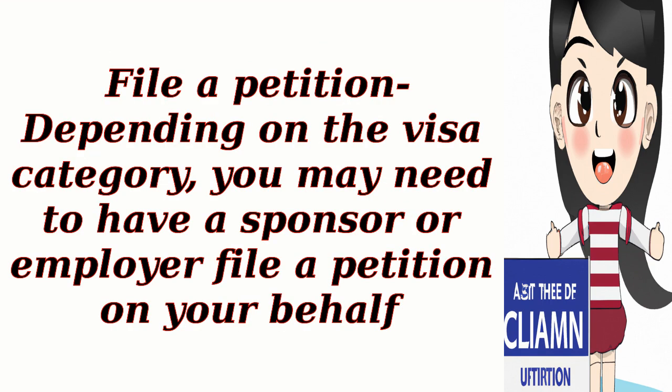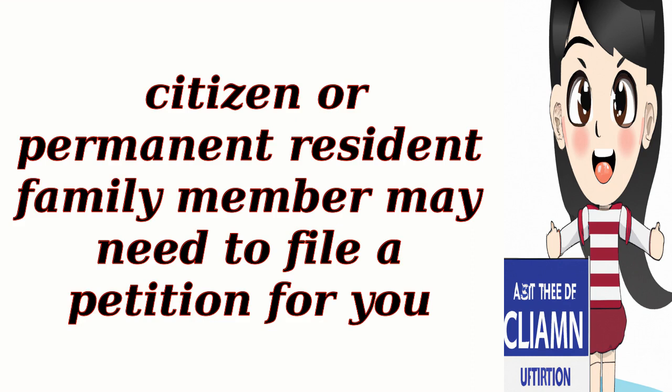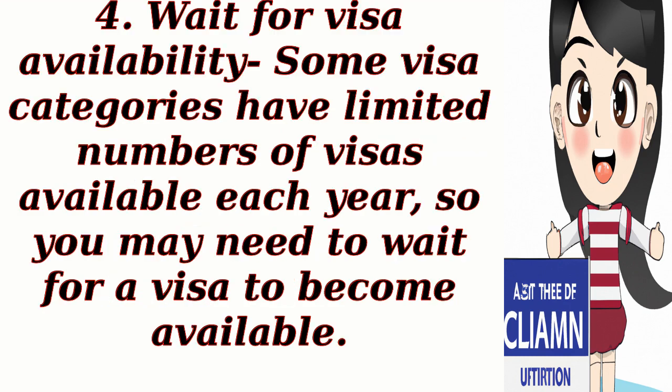3. File a petition: Depending on the visa category, you may need to have a sponsor or employer file a petition on your behalf. For family-based visas, a U.S. citizen or permanent resident family member may need to file a petition for you. 4. Wait for visa availability: Some visa categories have limited numbers of visas available each year, so you may need to wait for a visa to become available.